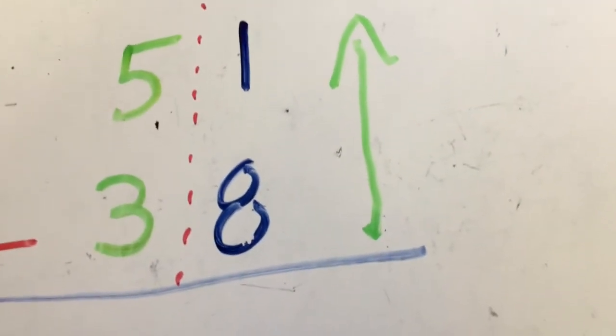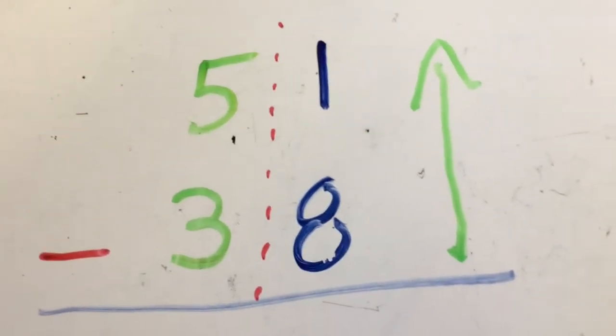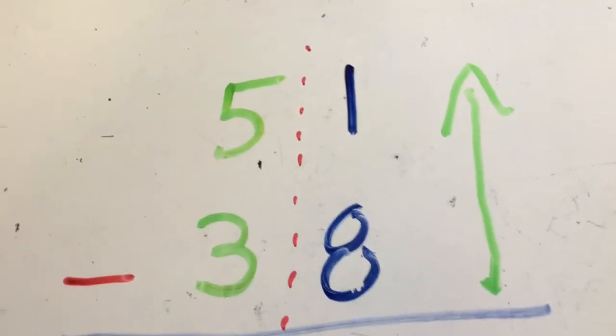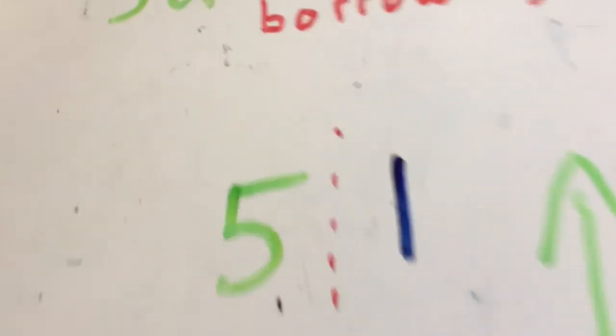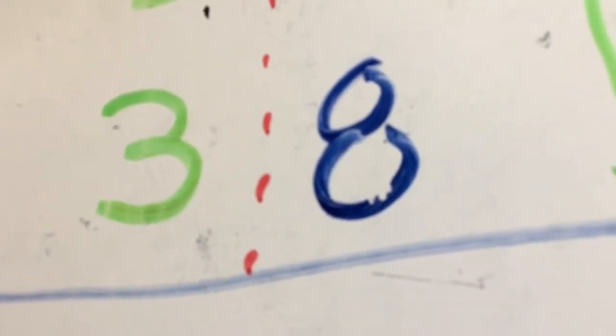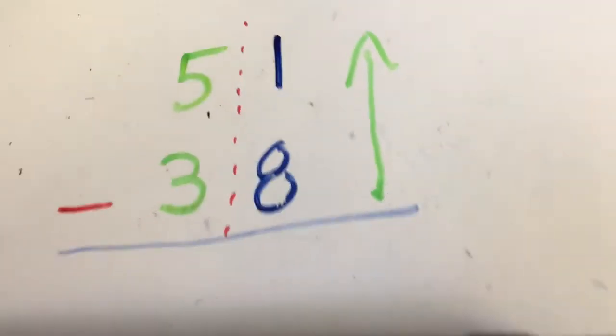When we subtract, we always start in the ones place and then we move on to the tens place. If there was another place here, it'd be the hundreds place, but there's not. We always start from the ones place. There's always going to be a ones place. And we go from the bottom. We're taking the bottom away from the top number. We always try to take the bottom number away from the top when the problem is set up like this.